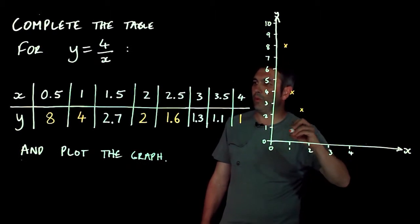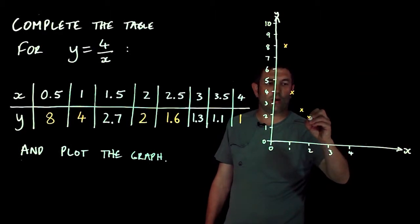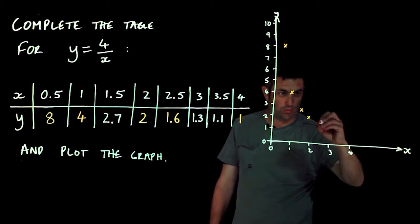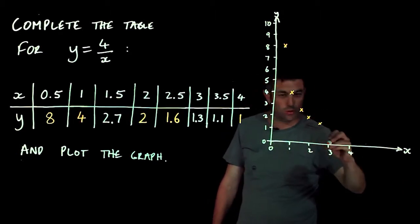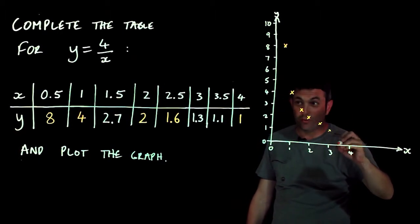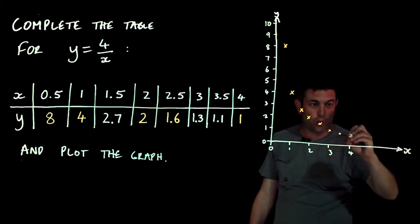In an exam you'll get graph paper. So 2, 2, there we go, it looks like it's not a straight line again. So 2.5 and 1.6 is about there-ish, quite difficult for me to do on this, 1.3, 3.5, 1.1 which is about there, and 4, 1 which is about there.